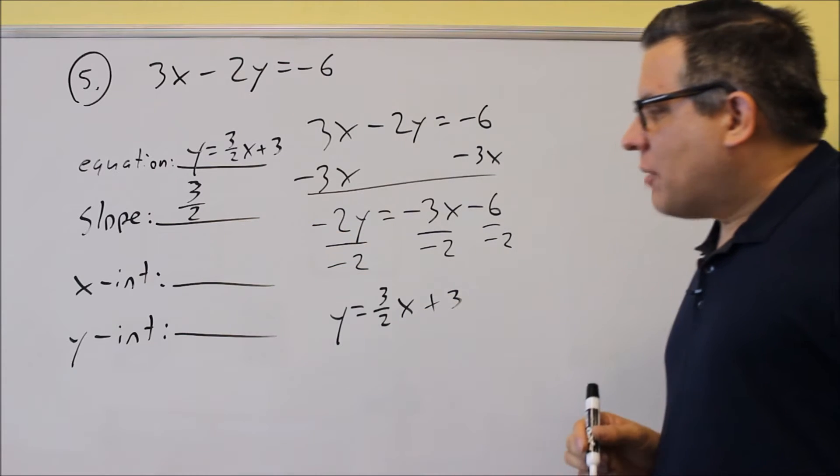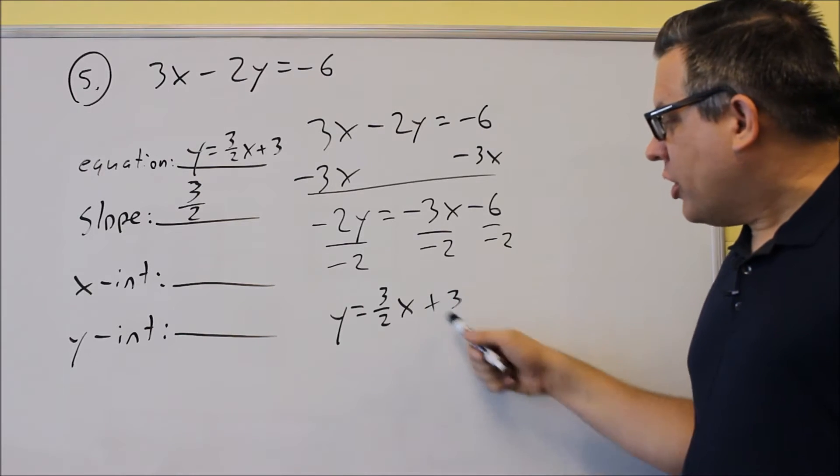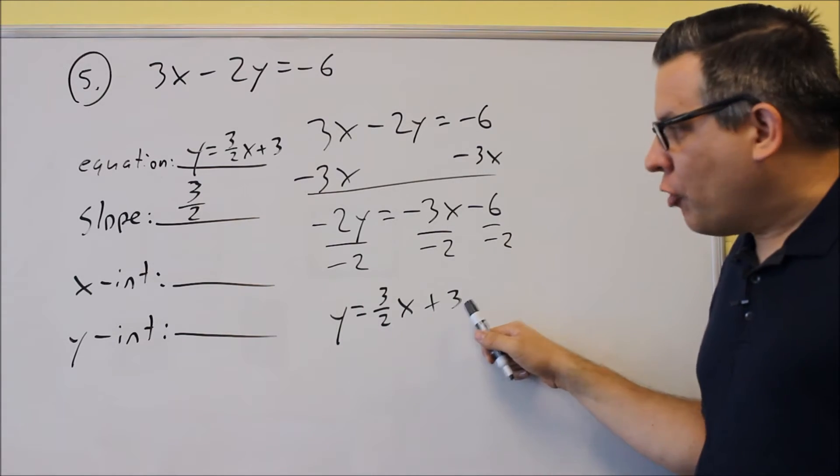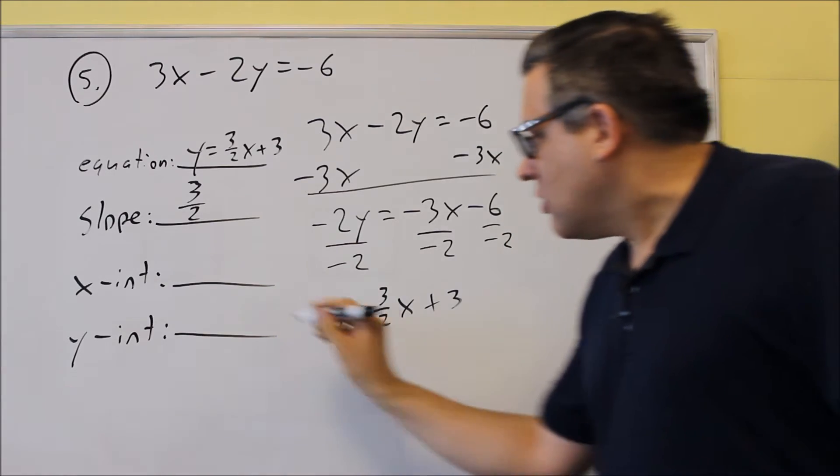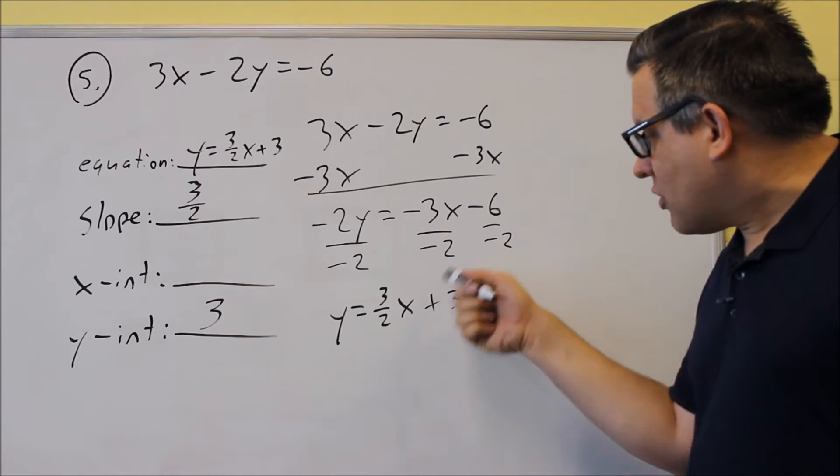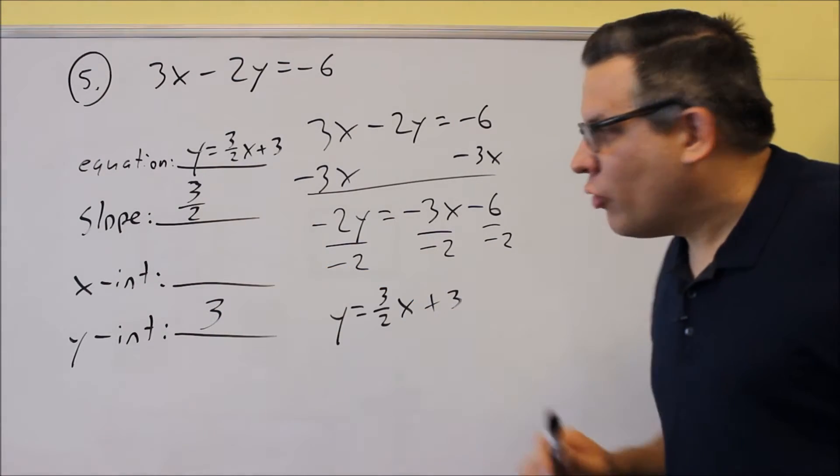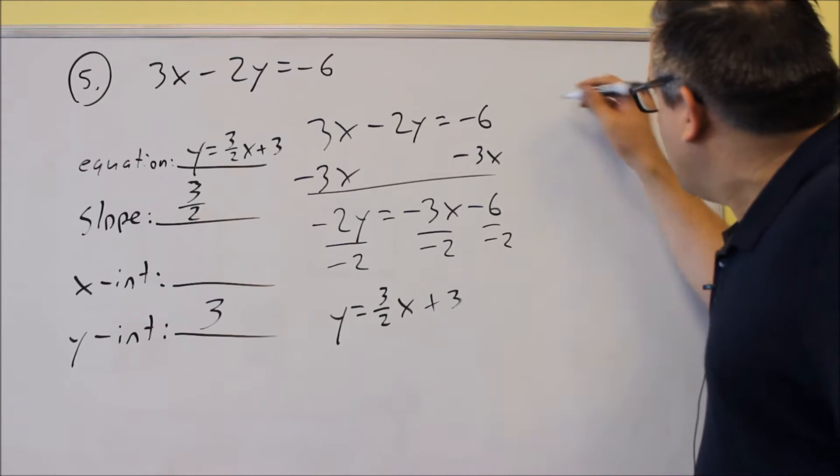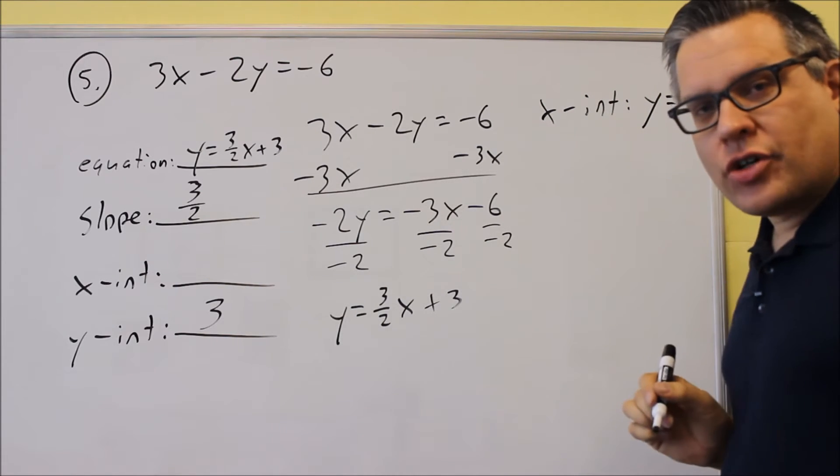And then for x-intercept and y-intercept, okay, since it is slope-intercept form, what we know automatically by putting it into that form is we know the y-intercept. That's always a number that comes after the x. So we don't have to solve for that one algebraically because we just look at the equation itself. Okay, so now the x-intercept, we've got to find that one algebraically. So for this one, x-intercept, you're going to put in a 0 for y.